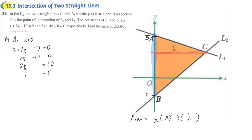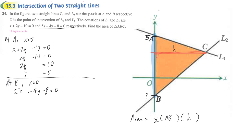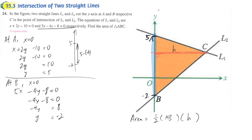Then we have to find out point B. At point B, exactly the same calculation — X is equal to 0 because we are talking about the Y-intercept. Using the L2 equation: 5X minus 4Y minus 8 equals 0. With X equal to 0, we have negative 4Y minus 8 left. Dividing both sides by negative 4, we get Y equals negative 2. So the Y-intercept here is negative 2. The vertical difference is 5 minus negative 2, which equals 7 units. So AB is 7 units.